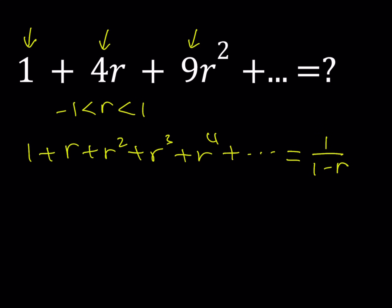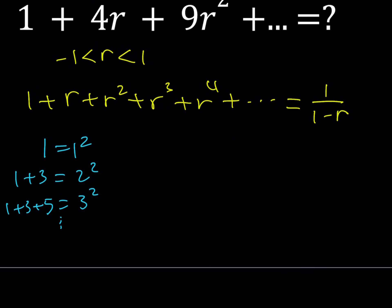So how do I manipulate this expression to get what we need? We're going to manipulate the left hand side, and obviously that's going to be the same on the right hand side. We have perfect square coefficients. When do you get perfect squares from sums? Well, if you add odd numbers you get perfect squares. For example, 1 by itself is 1 squared; 1 plus 3 is 2 squared; 1 plus 3 plus 5 is 3 squared, and so on.